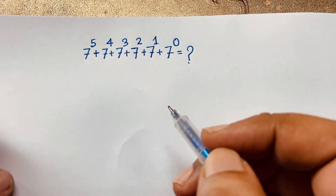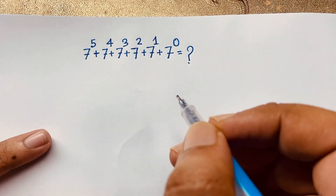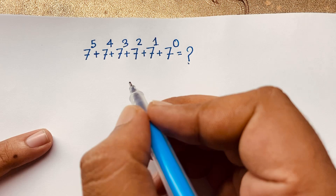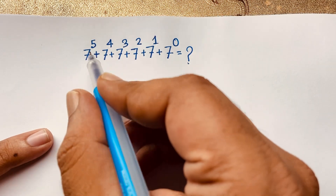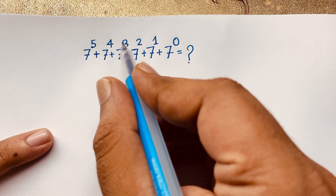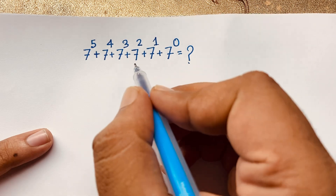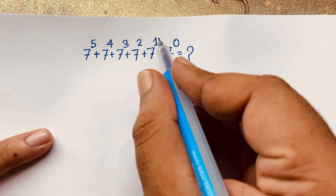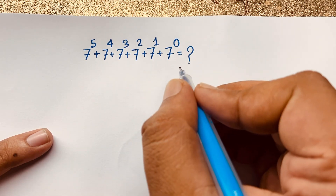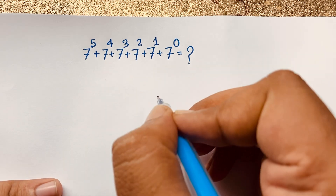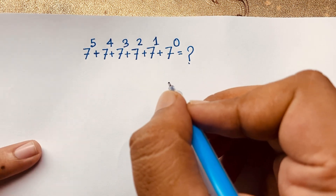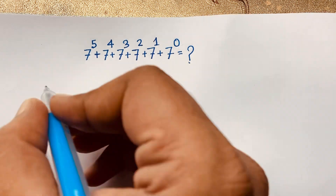Hello everyone, welcome to Russell's classroom. Today we have a nice math problem to solve. The question is 7 to the power 5, plus 7 to the power 4, plus 7 to the power 3, plus 7 to the power 2, plus 7 to the power 1, plus 7 to the power 0 — what does this equal? Let's solve this interesting math problem without a calculator.